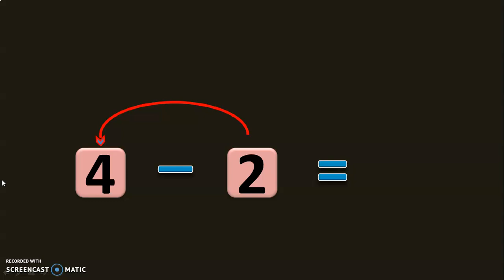To travel from 2 to 4, we need 3, 4. So how many numbers we need? 1, 2. So the difference between 4 minus 2 is equal to 2, which means that we have to travel 2 numbers in the forward direction to reach from 2 to 4.